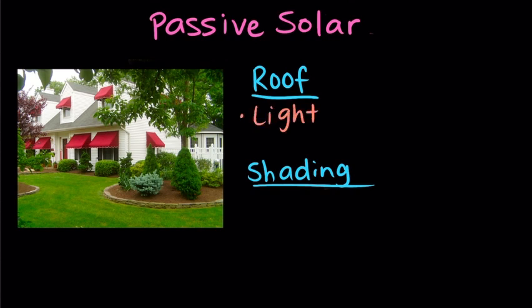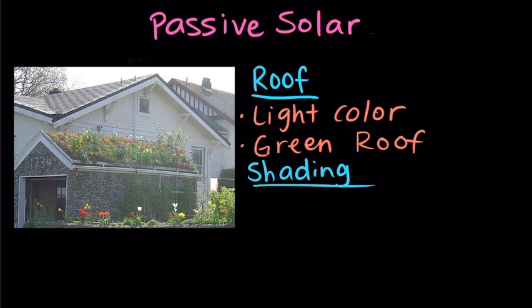Painting the roof a light color will reflect the sun's heat energy, much like choosing to wear a white t-shirt instead of a black shirt on a hot summer day. There's also a specialty type of roof called a green roof, where plants are grown on top of the home to provide an additional layer of insulation.